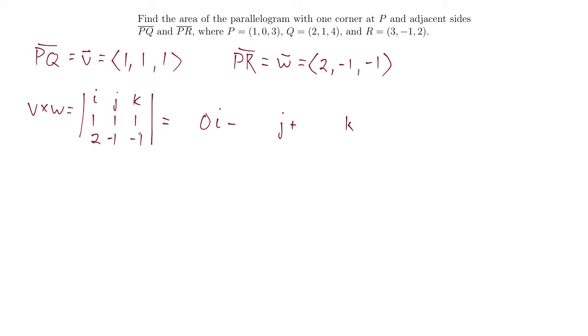The coefficient that I put in front of the J here, I look at 1, negative 1, that's negative 1, minus 1 times 2, 2. Negative 1 minus 2 is negative 3. So this becomes plus 3J, minus negative 3J, plus 3J.